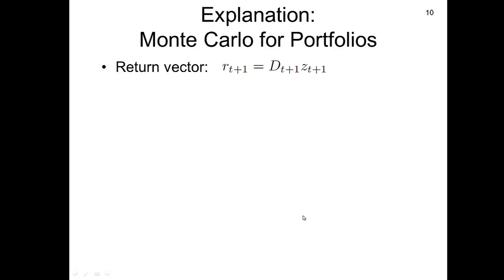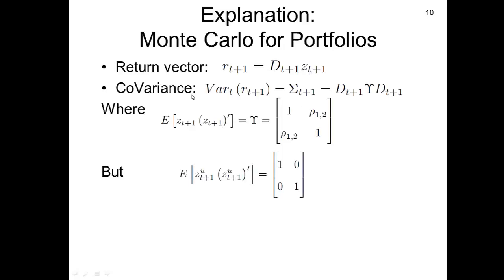For the Monte Carlo for portfolios, the general formula has the return as D (the sigmas) times z, which is the normally distributed variable. It has a covariance matrix Σ_t, which equals D times epsilon times D, where the expected value of z·z' is the correlation matrix epsilon — with 1s on the diagonal and ρ(1,2) on the off-diagonal. For uncorrelated random numbers, that would be the identity matrix with 0s on the off-diagonal.